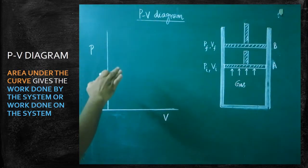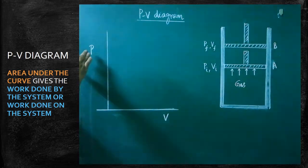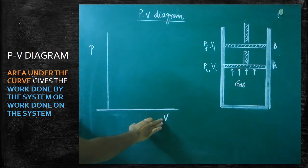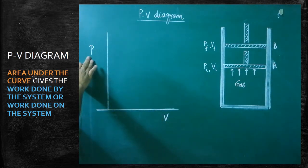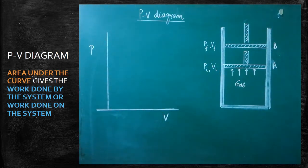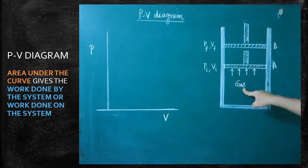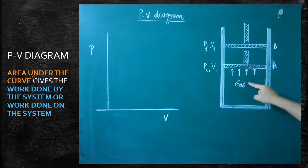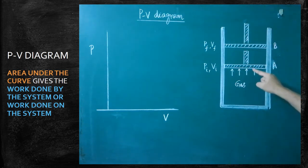We are going to learn what a PV diagram is. If any graph is drawn between pressure and volume, such a graph is called a PV diagram. Here, volume is taken on the x-axis and pressure of the gas is taken on the y-axis. Look at the cylindrical and piston arrangement. In the cylinder and piston arrangement, the initial position of the piston is taken as A, and within the cylinder the gas is filled up. If the gas expands, it will push the piston in the upward direction. Because of the push, that gas — that system — does the work. So the work done by the gas can be calculated by drawing the PV diagram.